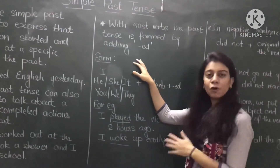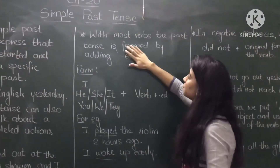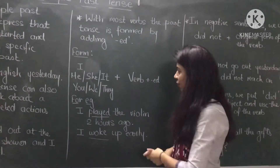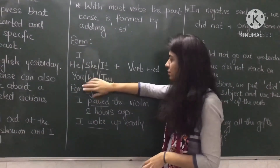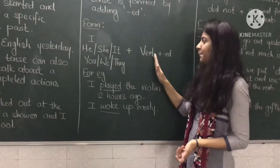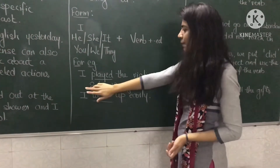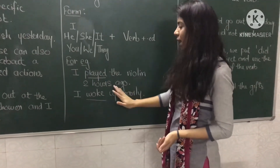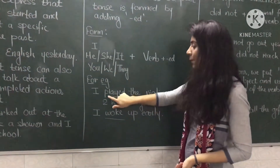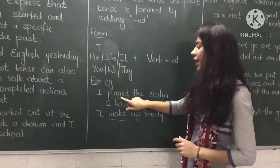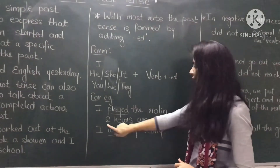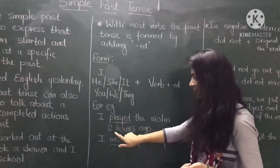Here is how you can form a simple past tense sentence. Most verbs in the past tense are formed by adding 'ed' to the verb. We use subjects I, he, she, it, you, we, they with verb plus 'ed'. For example, 'I played the violin two hours ago.' Here 'played' is the past form — 'play' is the original form of the verb, and by adding 'ed' it becomes the past form. This shows an action that happened two hours ago, so it is in simple past.